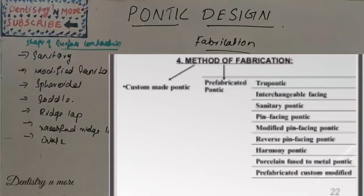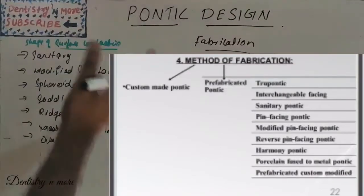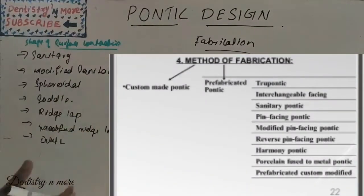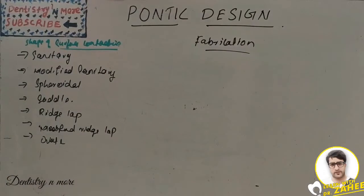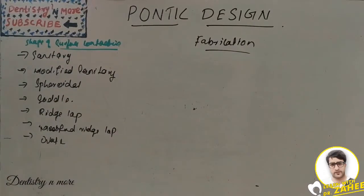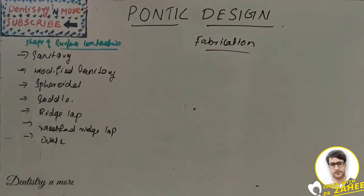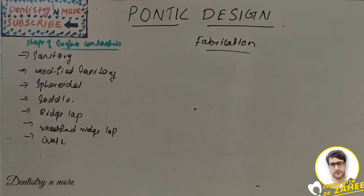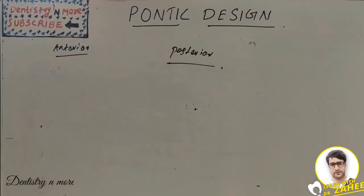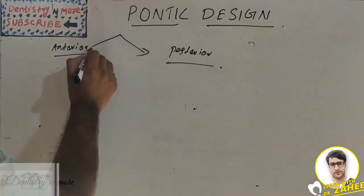The next classification is based on fabrication — that is, custom-made and prefabricated. In prefabricated, we have: true pontic, interchangeable facing, sanitary pontic, pin facing, modified pin facing, reverse pin facing, harmony pontic, porcelain-fused-to-metal prefabricated, and custom-modified pontic.